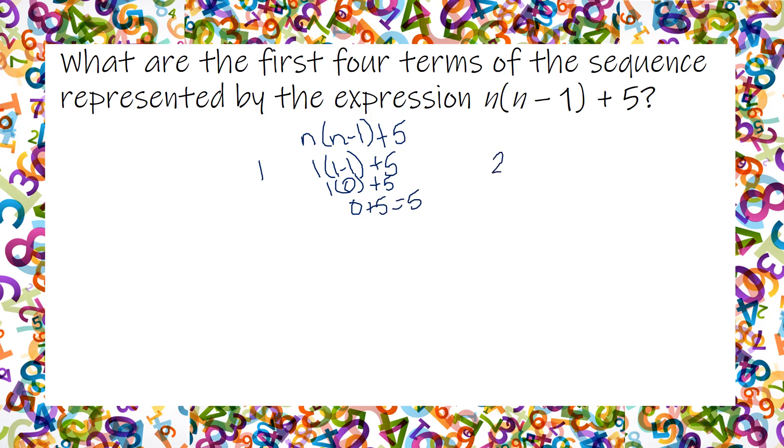My second term, I'm going to plug in 2. So 2 times 2 minus 1 plus 5. So I've got to do inside the parentheses first. 2 minus 1 is 1 times 2. That'll be 2 plus 5. That gives me 7. So far I've got 5 and 7.